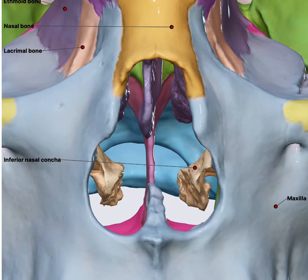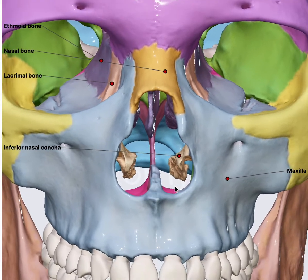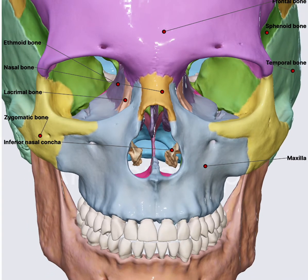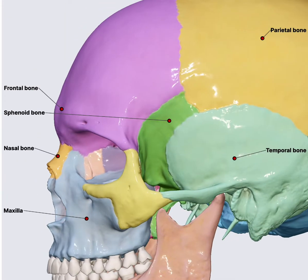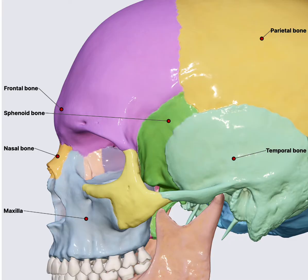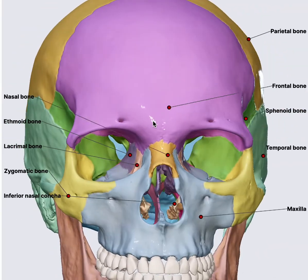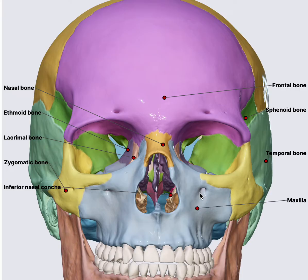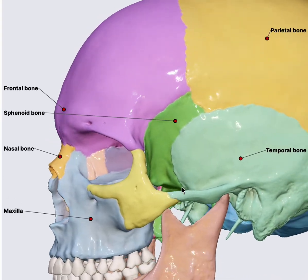Now we're going to talk about some more important and, frankly, scary bones. It's a universal consensus that the maxilla is a friendly bone, but there are others — the sphenoid and the ethmoid — which are more intimidating. They are scary because of the important structures surrounding them. With the maxillary sinus, injuring the infraorbital foramen carries less morbidity compared to injuries around the sphenoid and ethmoid, which have critical neighboring structures — the carotid artery and the optic nerve — where complications can have a very high impact.